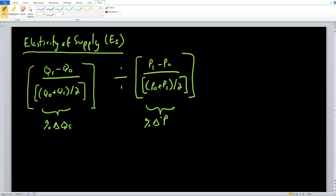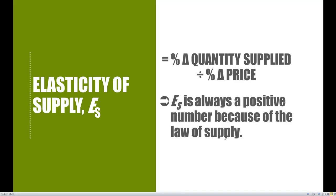This is for the same exact good. One important thing to note about elasticity of supply is that it is always going to be a positive number. We'll always have a positive in both the numerator and denominator, or a negative in both — because of the law of supply, which tells us there's a positive relationship between quantity supplied and price. When price increases, suppliers want to supply more; when price goes down, quantity supplied goes down — negative over negative is still positive. So we don't need to take the absolute value.